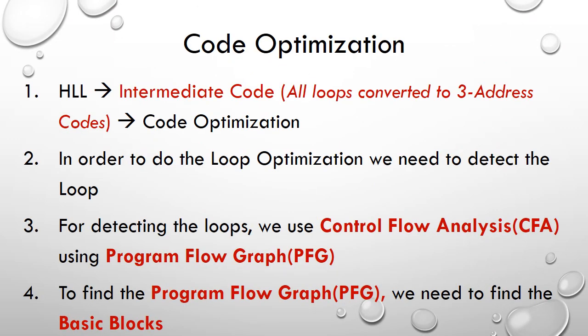High-level language code is converted into intermediate code, where all loops are converted to three-address codes. We then perform code optimization. Before doing code optimization, we only have three-address codes, which do not actually signify loops. In order to do loop optimization we need to detect the loop. Since in three-address code we do not have loops, we need to detect them using control flow analysis.